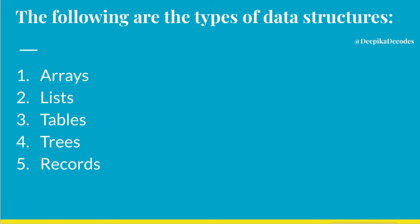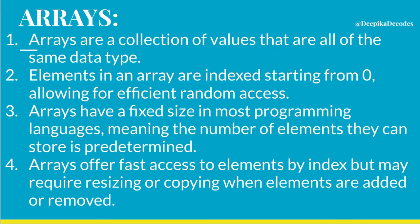The following are the types of data structures. First, Arrays: Arrays are a collection of values that are of the same data type. Elements in an array are indexed starting from 0, allowing for efficient random access.